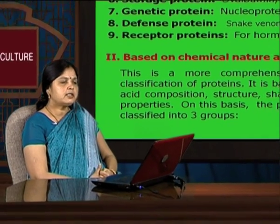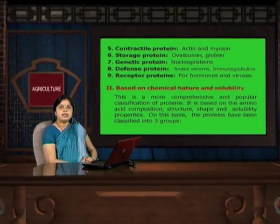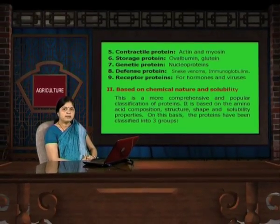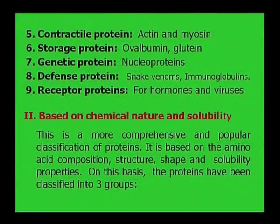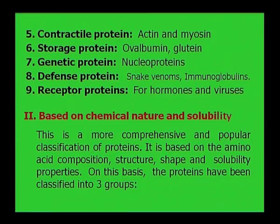Contractile proteins: the example of contractile proteins are actin and myosin; they are present in the muscle tissues and involved in the contraction of muscles. Storage proteins are ovalbumin and gluten. Genetic proteins are nucleoproteins present in the nucleus and carry out genetic information. Defense proteins are snake venom and immunoglobulins, providing defense against diseases. The example of receptor proteins are hormones and viruses.